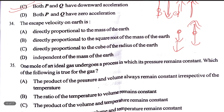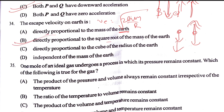Escape velocity on Earth — the escape velocity formula is the square root of 2GM/R. It is directly proportional to the square root of the mass of the Earth.